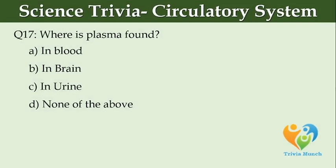Where is plasma found? Option A: in blood. Option B: in brain. Option C: in urine. Option D: none of the above.